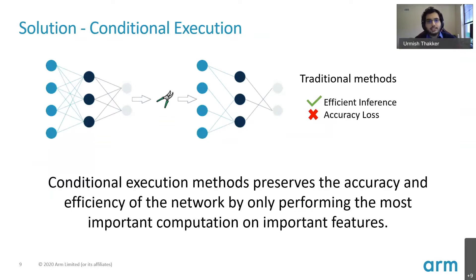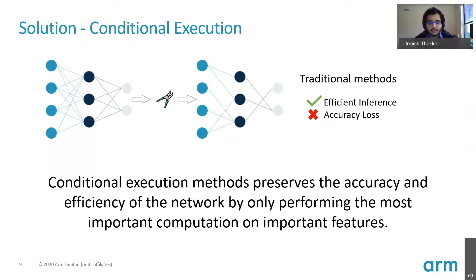Conditional execution technologies are techniques that keep all of the neural network but activate only part of it depending on the input. For each different input, the part of the neural network that is executed is slightly different. Because we keep all of the parameters, in theory we should be able to achieve the full baseline accuracy. And because you only execute part of the network, you should be able to get faster inference runtime on hardware and also reduce your active memory footprint.